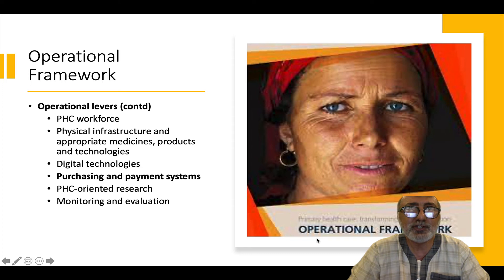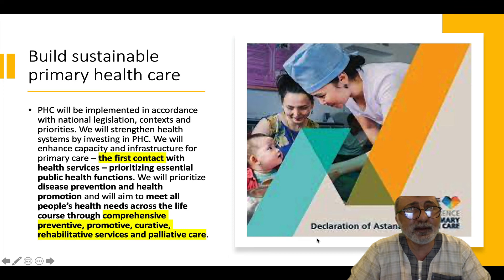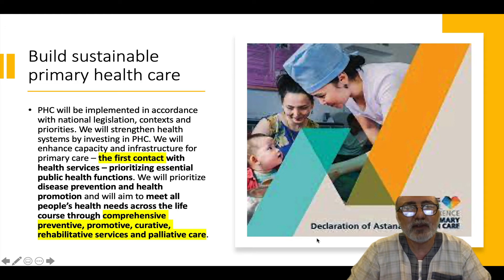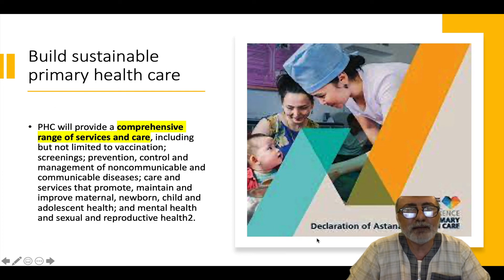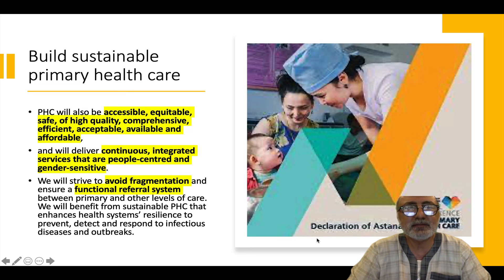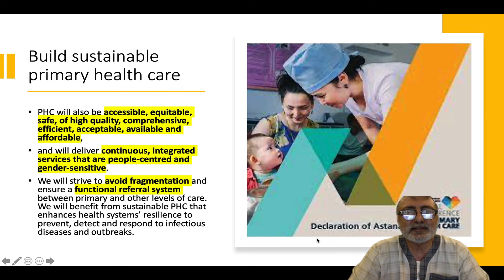These are the changing conversations of primary health care 40 years later — still very much the same ideas of Alma-Ata but with slight distinctions in how to actually implement primary health care better. It is still seen as primary health care being first contact, comprehensive, promotive, curative, rehabilitative, and palliative care — comprehensive and not limited to narrow services. It is accessible, equitable, high quality, efficient, acceptable, available, and affordable, but specifically continuous integrated services that are people-centred and gender-sensitive, seeking to avoid fragmentation and ensure a functional referral system.